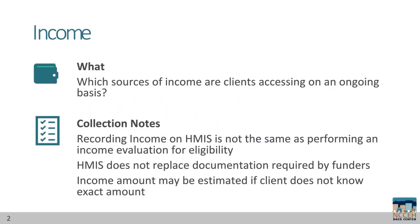Income refers to the sources of income that clients access on an ongoing basis. Don't record one-time income such as a gift from family or some change found on the sidewalk. Keep in mind that collecting income data is not the same as an income evaluation for eligibility. HMIS does not require documentation for income and it doesn't count as income documentation for other funders.